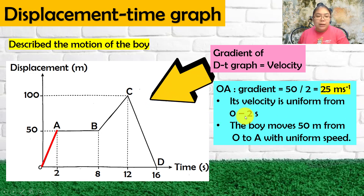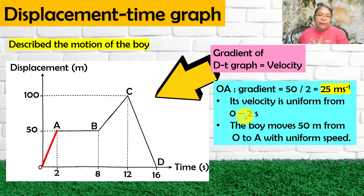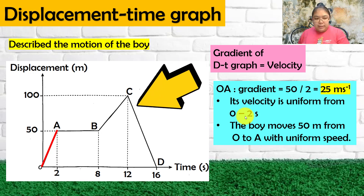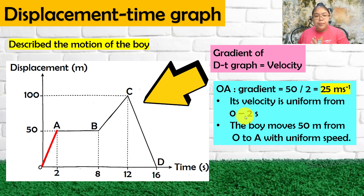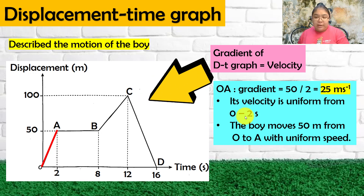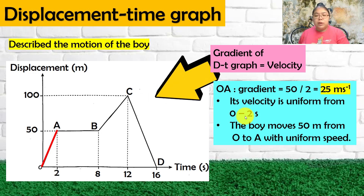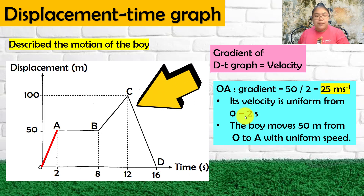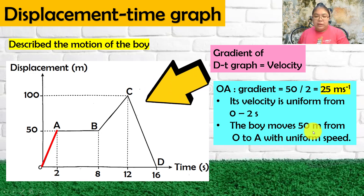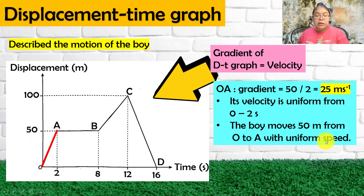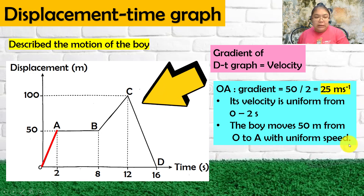The uniform velocity is 25 m/s from 0 to 2 seconds. The boy moves with velocity 25 m/s. Also, the boy moves 50 meters from O to A with uniform speed. When a question asks about motion, we answer using velocity or acceleration — we do not say fast or slow.